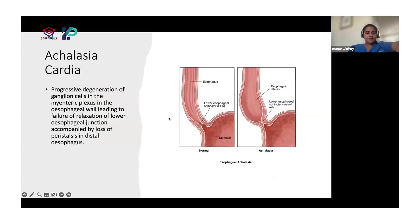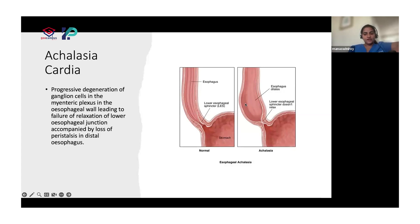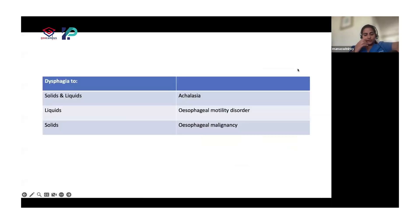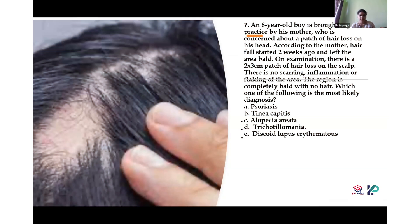This is your normal esophagus, and this is your achalasia esophagus — there's going to be dilatation here and a narrowing over here. Guys, take a screenshot of this if you want, because it's pretty important with respect to AMC MCQ. Always remember: solids and liquids occurs in achalasia. Just liquids will be seen in motility disorders, and solids — like George said — is seen in malignancies.